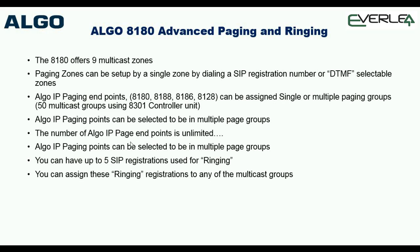The Algo paging endpoints can be the 8180, 8188, 8186, and 8128 — they're fundamentally very similar. Once you get your head around what the 8180 can do, for example the 8186, which is the bullhorn weatherproof version, is almost identical in operation. Up to now I've been talking about basic ringing and paging with some basic paging groups.